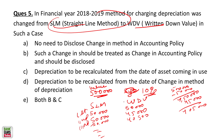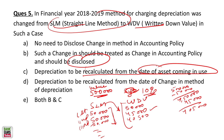Switching from SLM to WDV would increase profits, which is not fair — you cannot change the method just to boost profits. As per AS6, proper disclosure must be made in the accounting statement, and the depreciation must be recalculated from the date the asset first came into use. The method change applies retrospectively from the very first year, so the values are restated from year one. Both disclosure and retrospective recalculation are required.